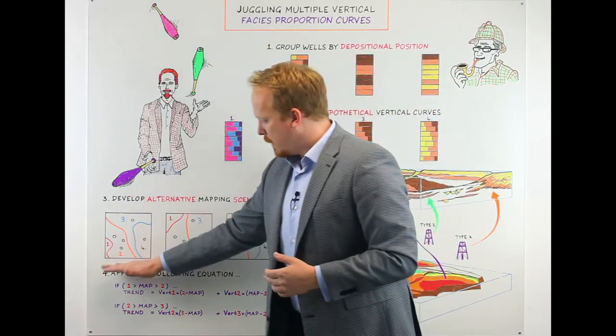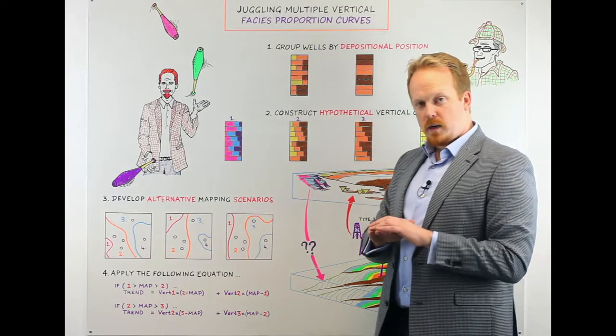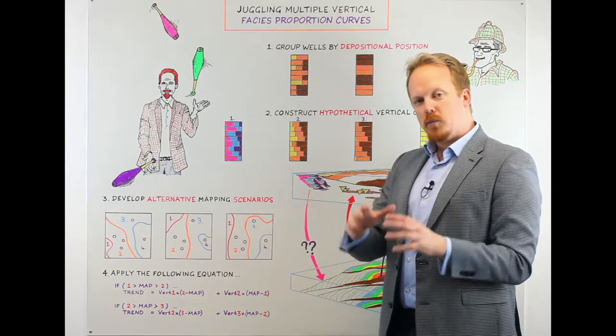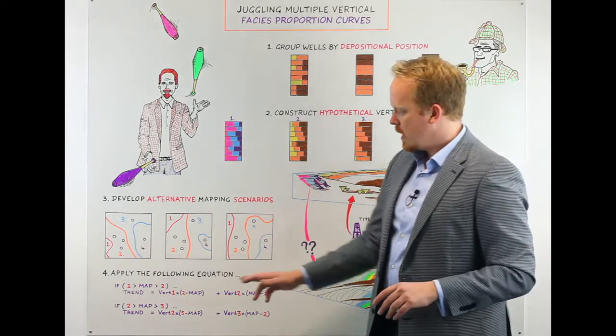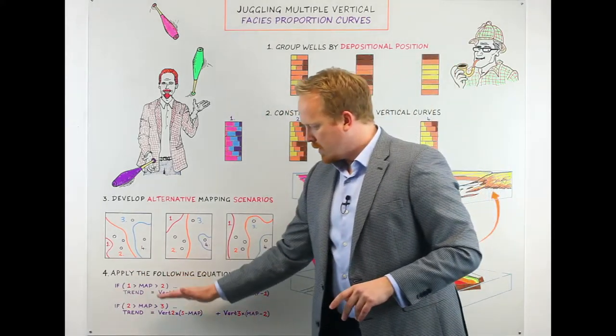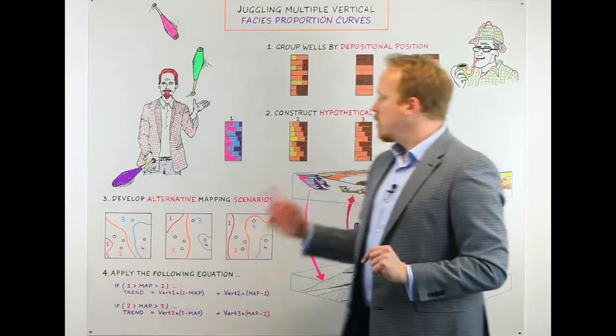I can simply blend together these four properties that are the same everywhere in three-dimensional space into a model that has different vertical curves in every point in space by using this equation here.